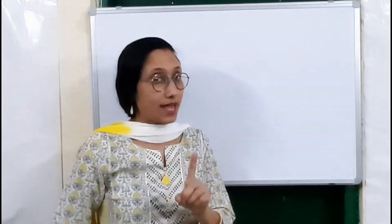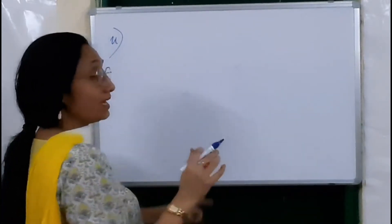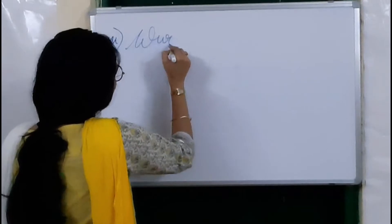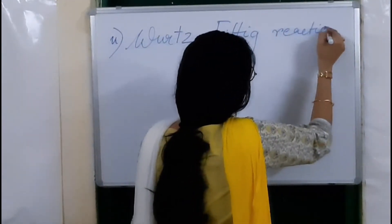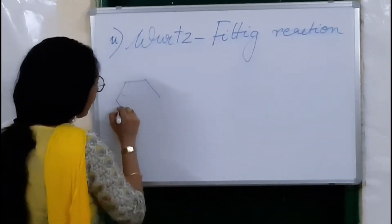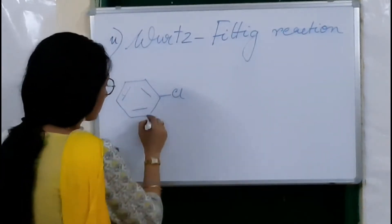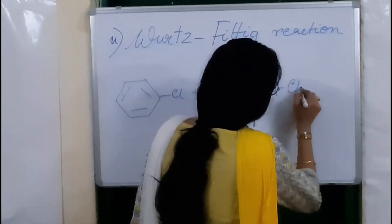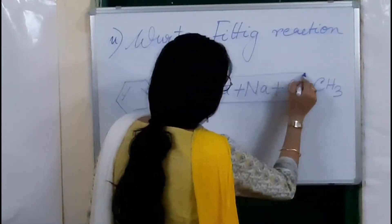Now let us discuss the second reaction of aryl halides with sodium. When an aryl halide is treated with an alkyl halide in the presence of sodium and dry ether, the reaction is known as the Wurtz-Fittig reaction. Let us take one aryl halide — chlorobenzene — plus sodium, plus one alkyl halide, methyl chloride.